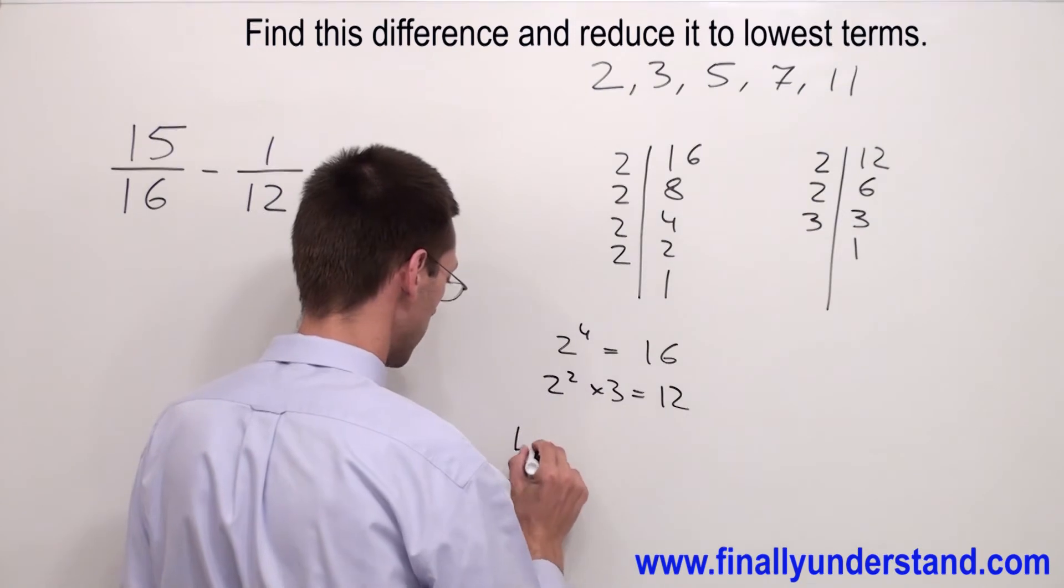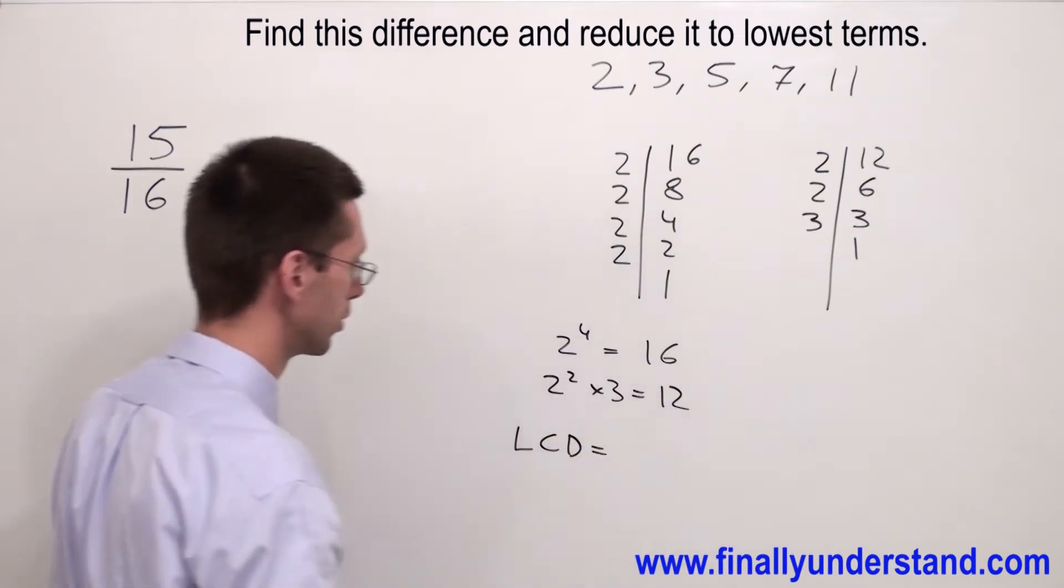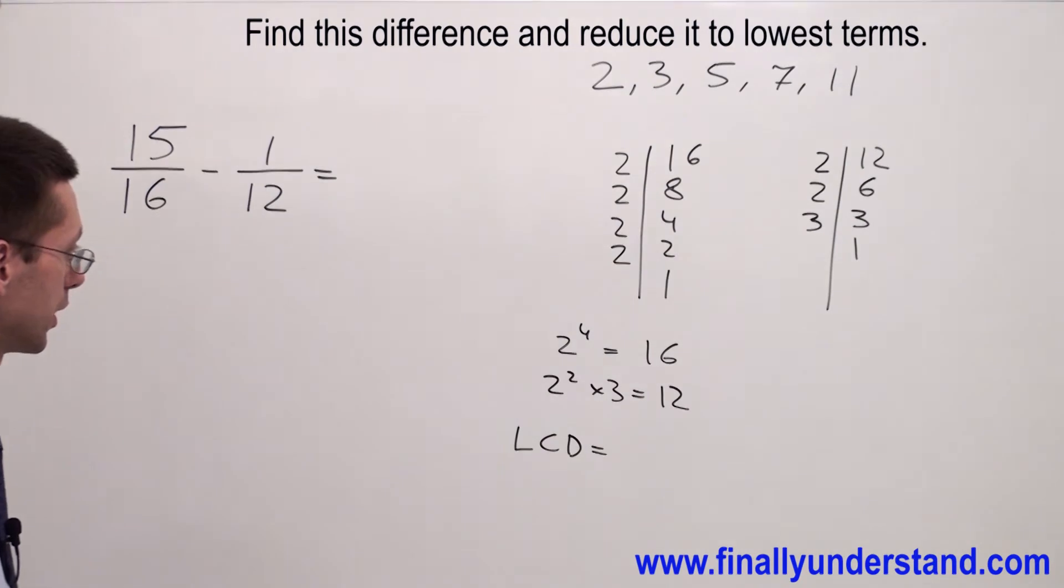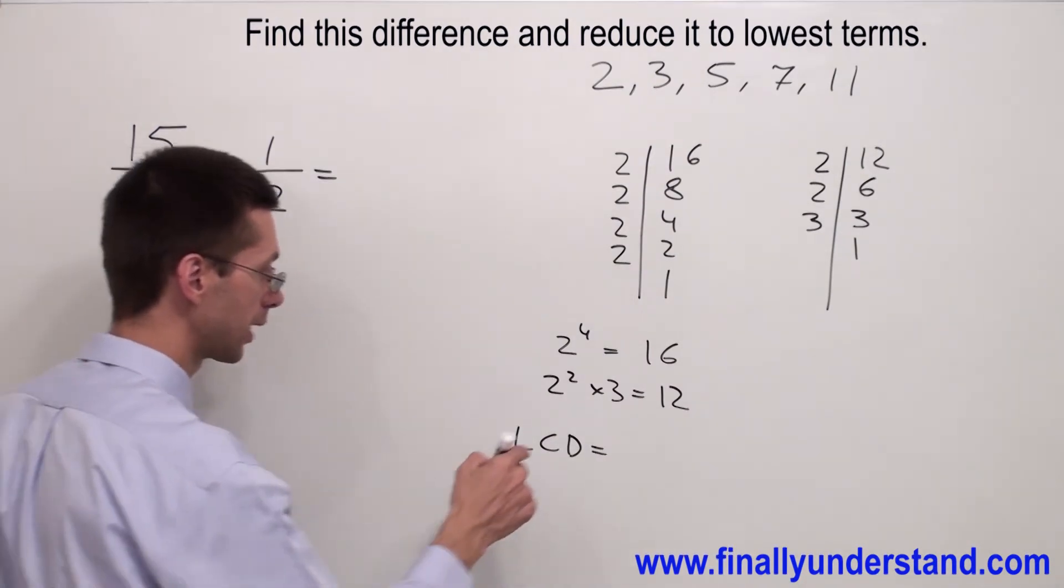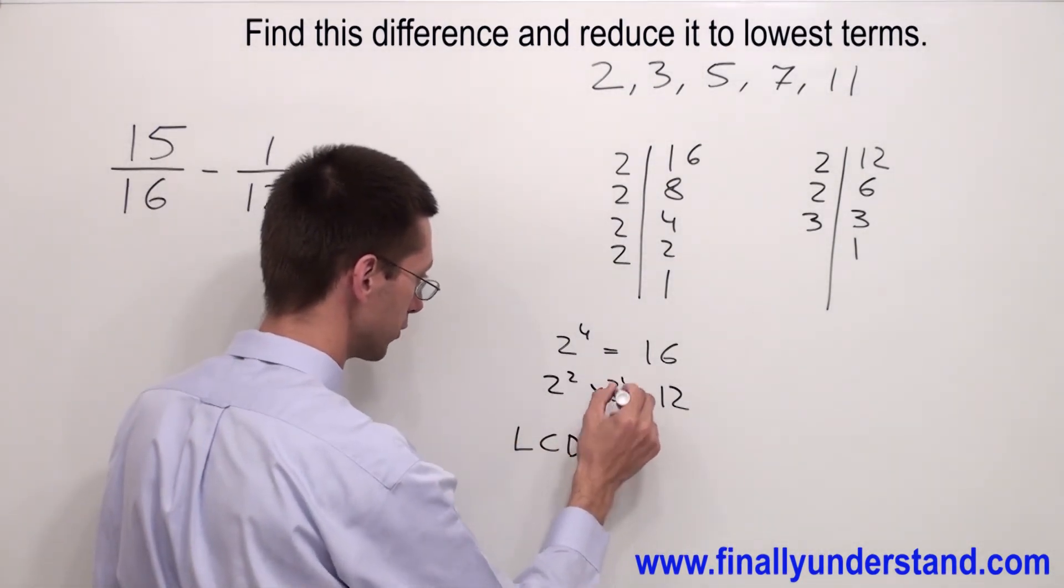If you are looking for LCD, the lowest common denominator, you have to look always for different numbers and highest power. Remember, anytime there is a number without the power, there is always an invisible one.